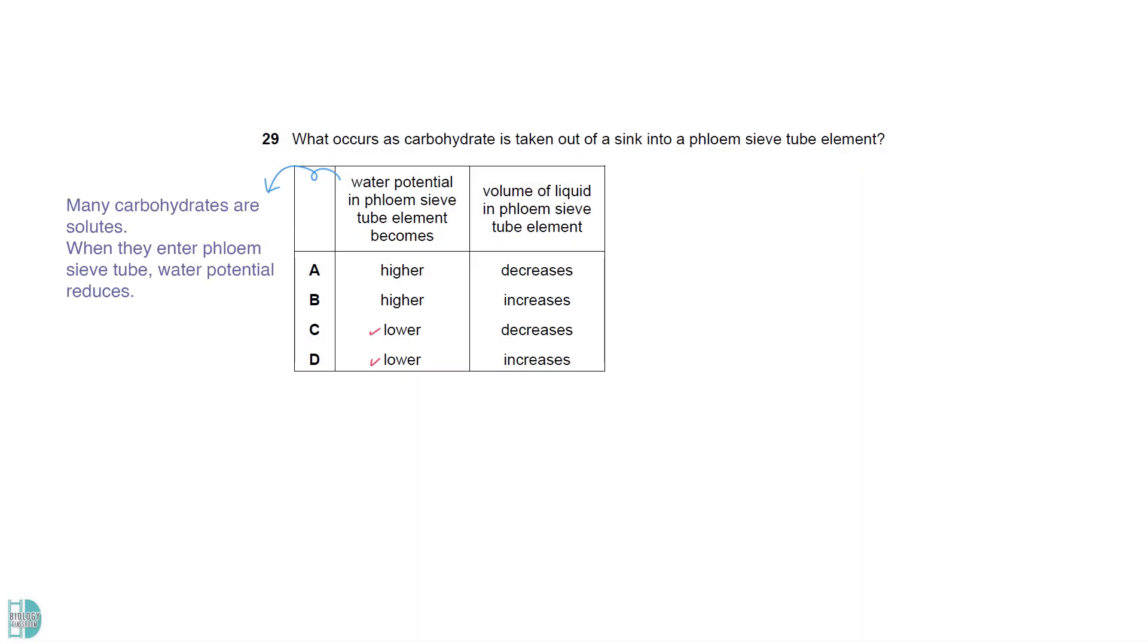Many carbohydrates are solutes. When they enter the phloem sieve tube they reduce the water potential. This creates a water potential gradient. Water from the cells in the surrounding will enter the phloem sieve tube by osmosis, increasing the volume of liquid inside it.